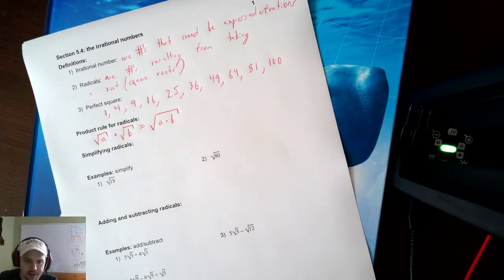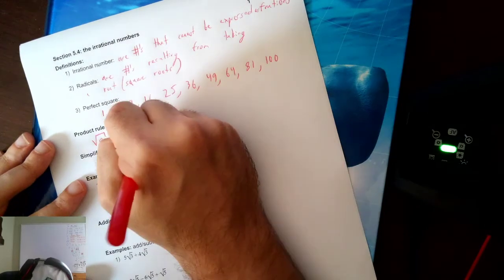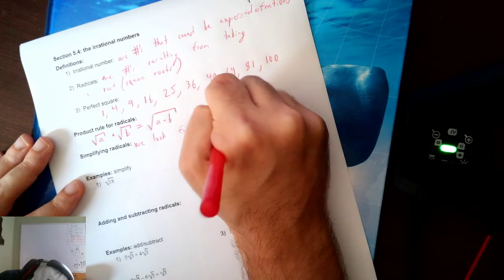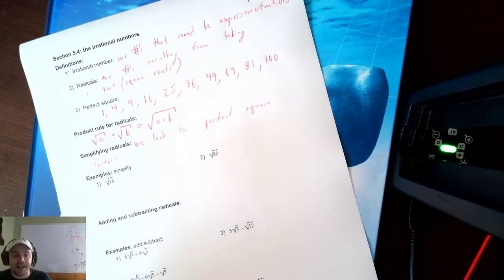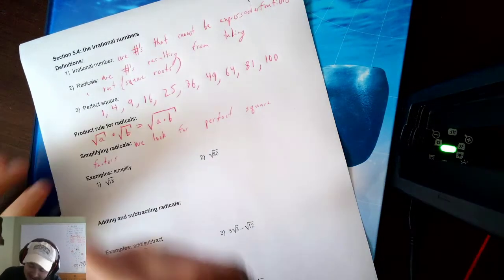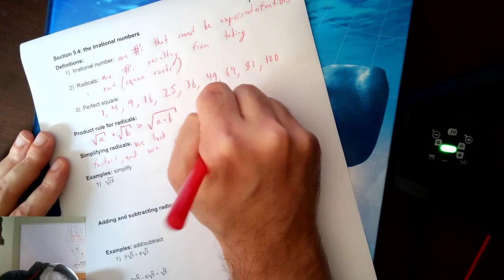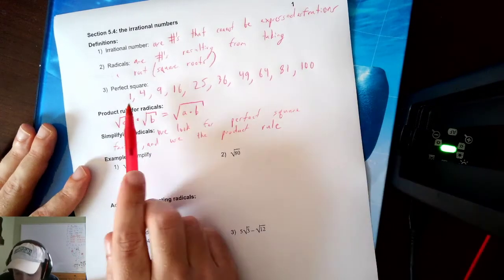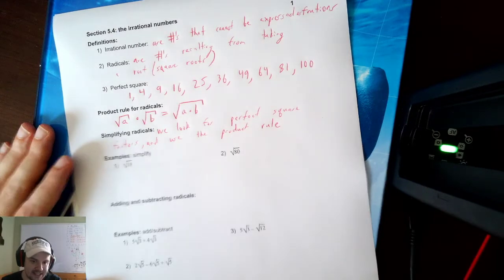So the product rule for radicals — you can multiply like that. When simplifying radicals, we use the product rule and we look for perfect square factors. I check if the number divides by any perfect square factors and use the product rule. Let's look at 18. I want to see if any of these perfect squares divide it, and if so, what the biggest one is.